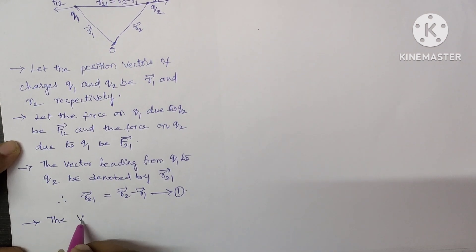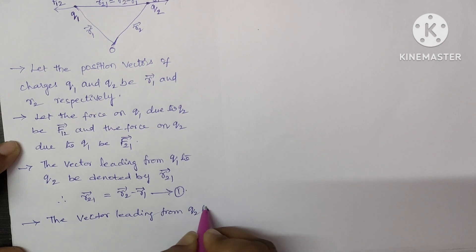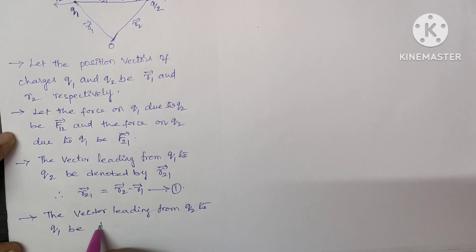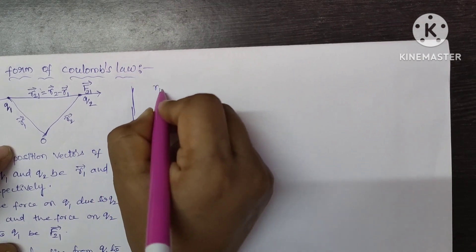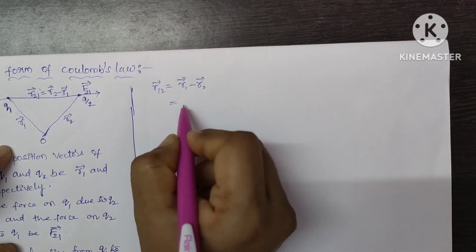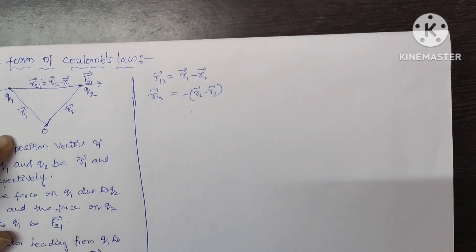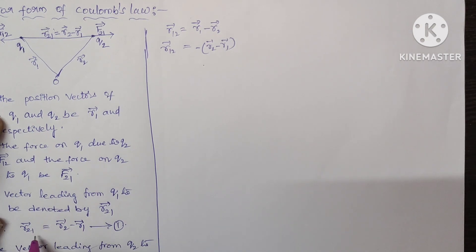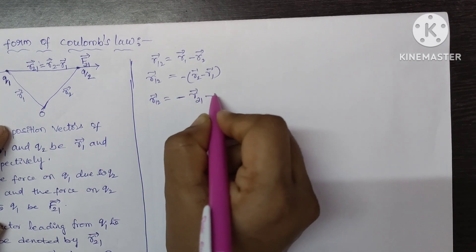In the same way, the vector leading from Q2 to Q1 be denoted by R12. Therefore, R12 bar is equal to R1 minus R2. Here we got R12 is equal to R1 minus R2. Taking the negative as common, this can be written as minus of (R2 minus R1). From equation number 1, it is clear that R2 minus R1 is nothing but R21. So R12 bar is equal to minus of R21. Let it be equation number 2.